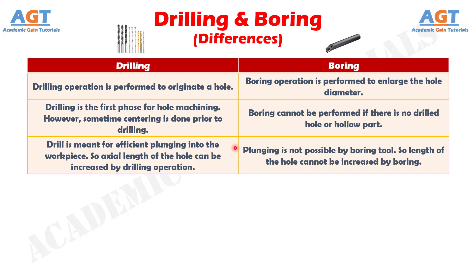Number 3: Drill is meant for efficient plunging into the workpiece, so the axial length of the hole can be increased by drilling operation, whereas plunging is not possible by boring tool, so the length of the hole cannot be increased by boring.